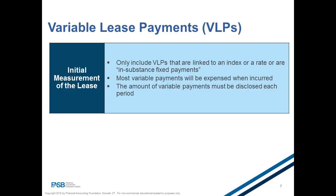How about variable payments — for example, when a portion of the lease cost is determined by percentage of sales? Variable payments will be expensed when incurred and not included in the measurement of the right-of-use asset and lease liability. Variable payments must also be disclosed. For short-term leases, for cost-benefit and practical reasons, the board provided an option to expense leases with terms of less than one year and not recognize them on the balance sheet. However, these amounts must be disclosed along with the fact that the accounting policy was elected.